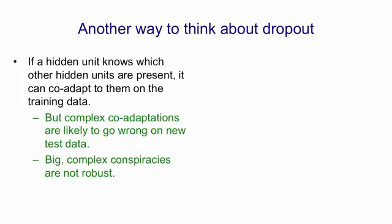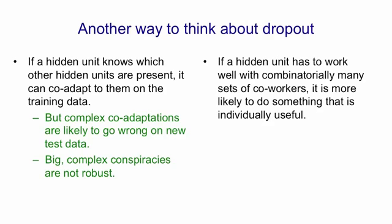It's much better if you want conspiracies to have lots of little conspiracies. Then when unexpected things happen, many of the little conspiracies will fail, but some of them will still succeed. So by using dropout, we force a hidden unit to work with combinatorially many other sets of hidden units. And that makes it much more likely to do something that's individually useful rather than only useful because of the way particular other hidden units are collaborating with it.